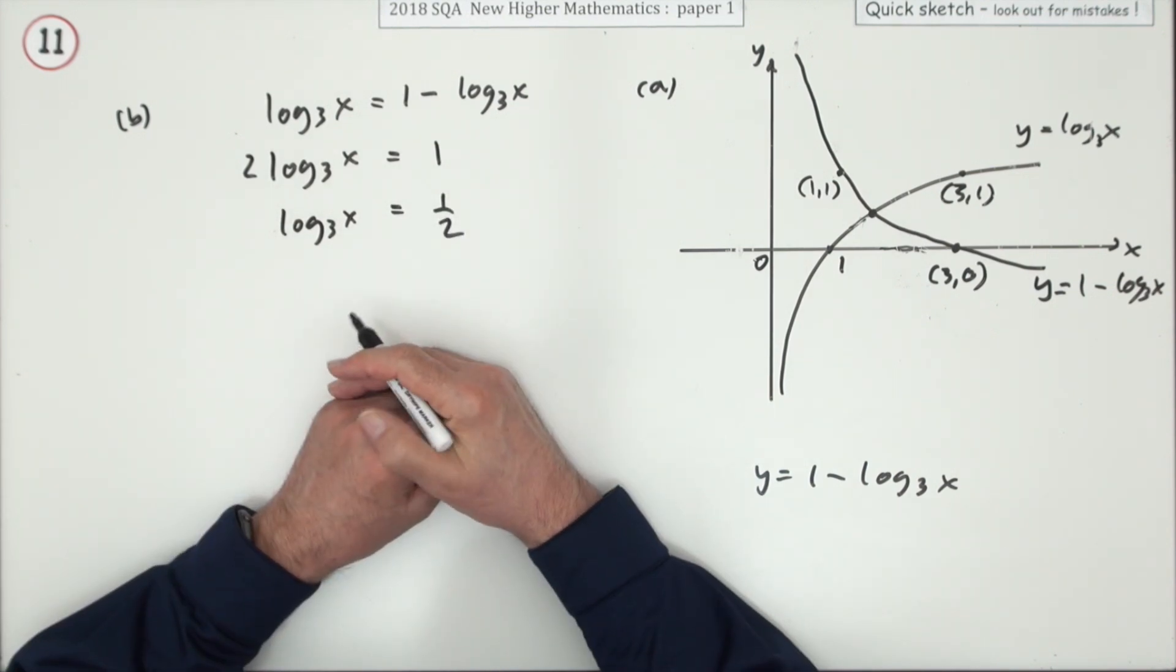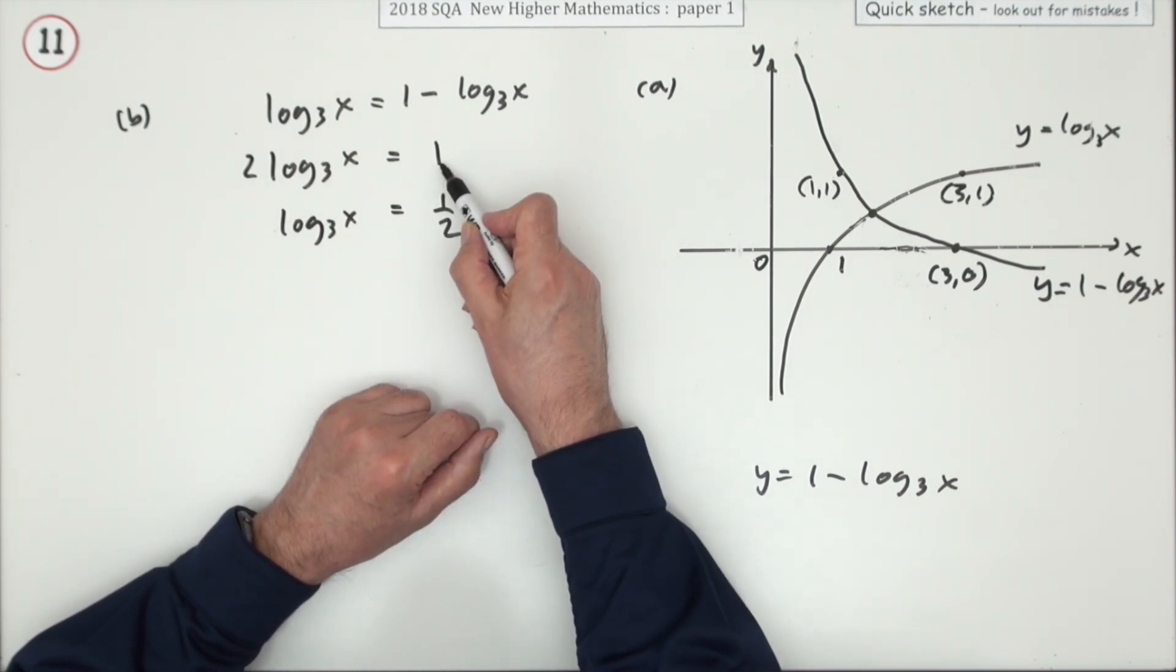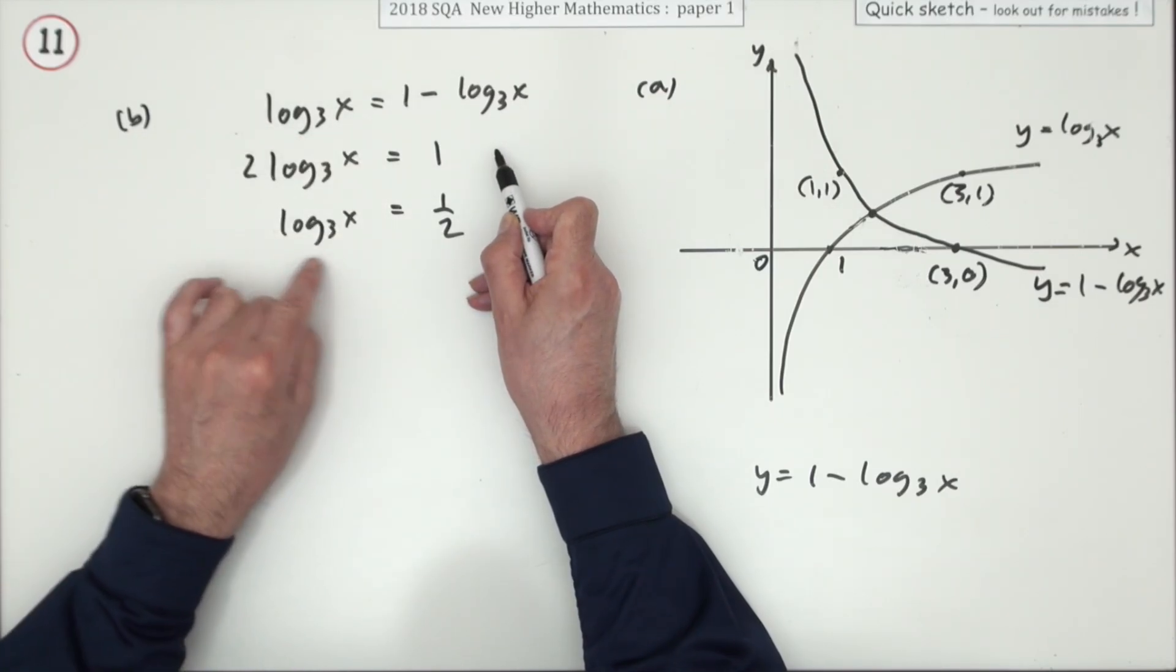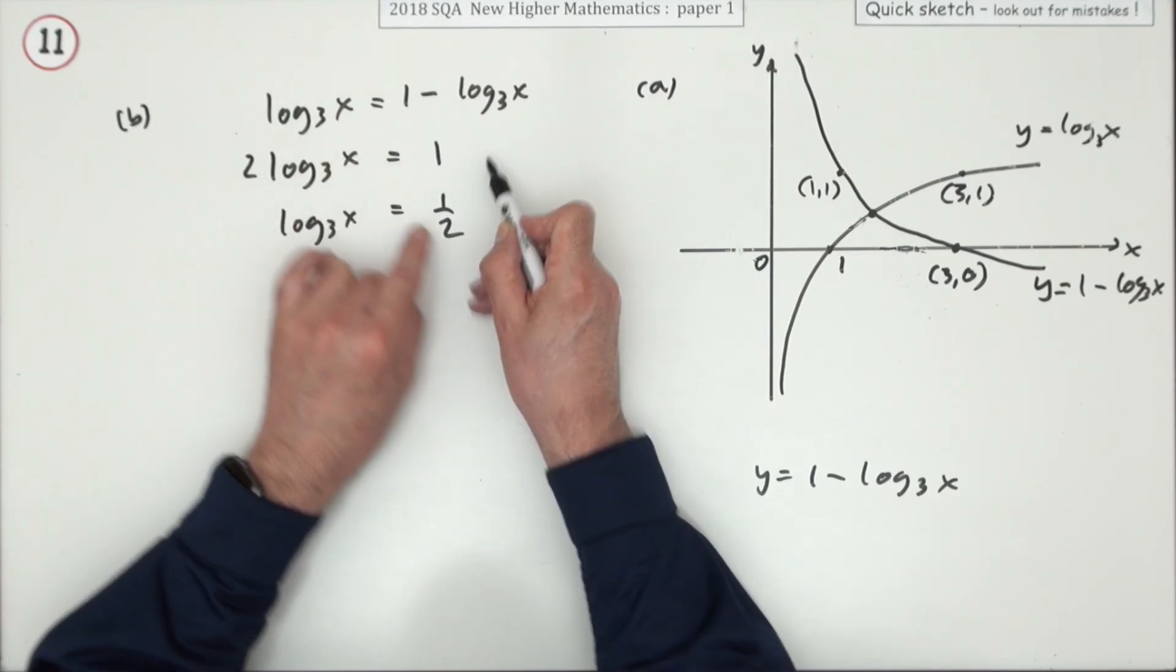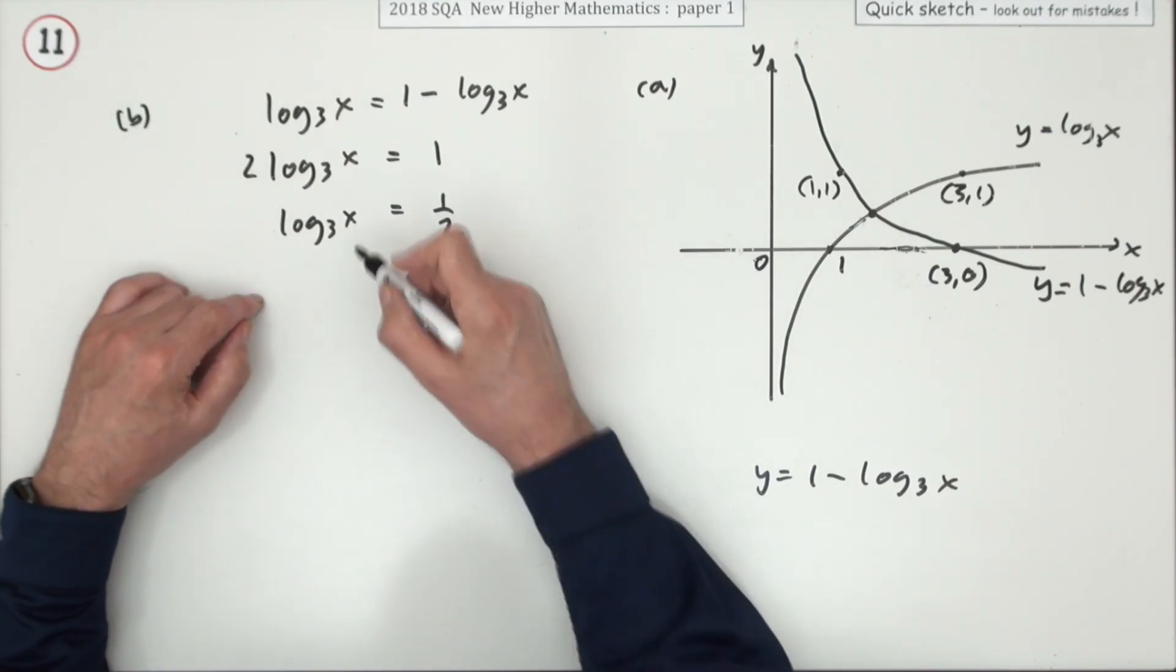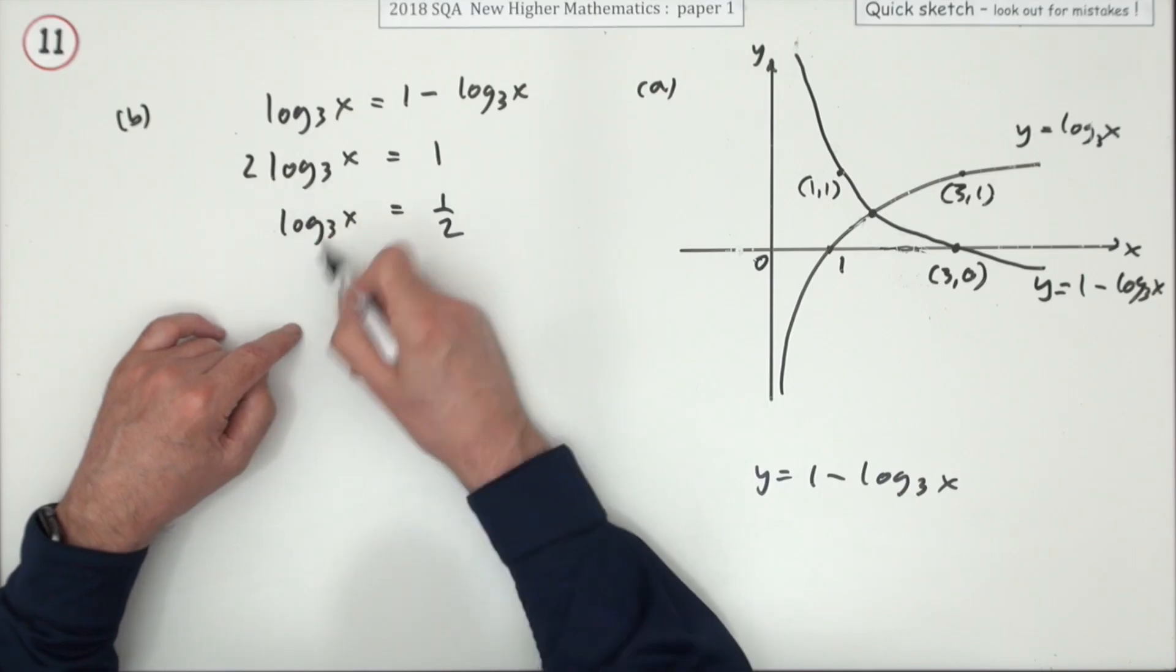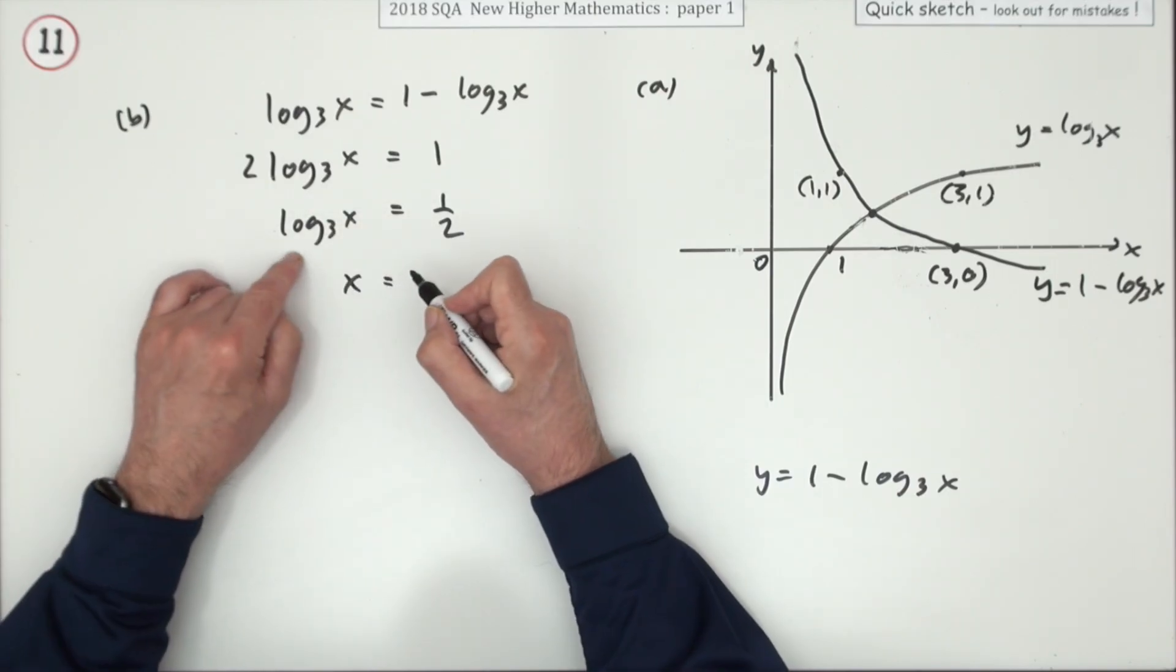You may well at this point reconstruct that as log base 3 of 3 and pop that inside and have log base 3 of x squared as log base 3 of 3, so x squared equals 3. But I think I'll just do this, I'll take the two across to leave log₃x, got rid of the two, now I'll get rid of the log, inverse of log base 3.